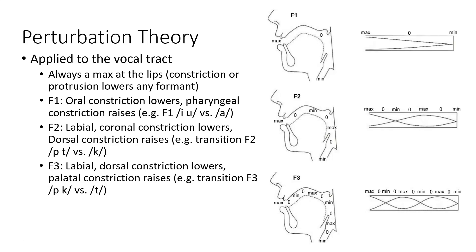Looking at the volume velocity function for F2 mapped onto the vocal tract, constrictions at the lips or at the alveolar ridge — like for a coronal consonant — would be in the vicinity of one of the maxima, and so that would lower the second formant. If we had a constriction near the back of the hard palate and soft palate, that's near a minimum, and that will have the opposite effect of raising that formant. These patterns are consistent with F2 transitions: labial and alveolar sounds have F2 transitions that go up into the vowel, whereas the velar sound has an F2 transition that goes downward into the vowel.